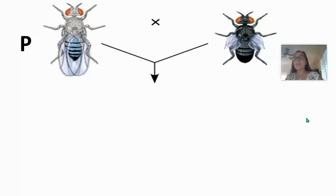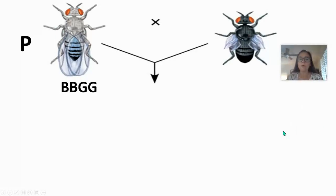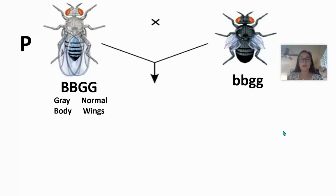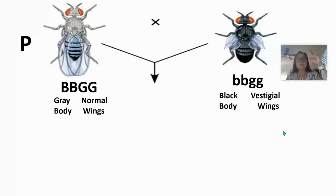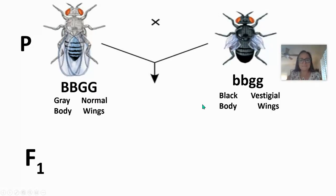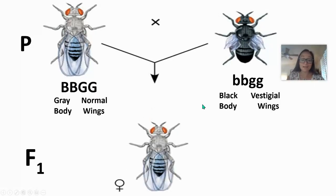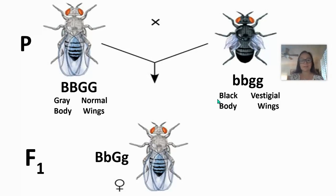One cross he did involved a homozygous dominant fruit fly with a gray body and normal wings — those are our dominant phenotypes — crossed with a homozygous recessive partner with a black body and vestigial wings, which are shriveled wings that would reduce fitness. The F1 generation should all look like the dominant phenotypes: gray body and normal wings, because they'll have a dominant allele for each trait. All of the F1 will be heterozygous dihybrids.